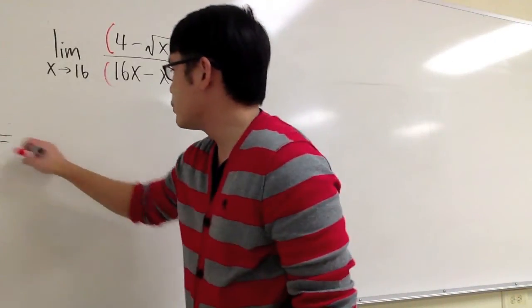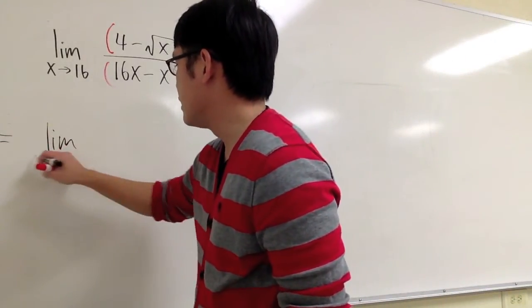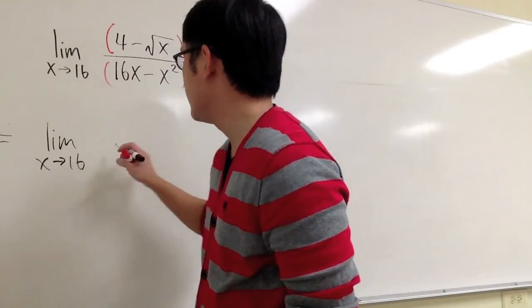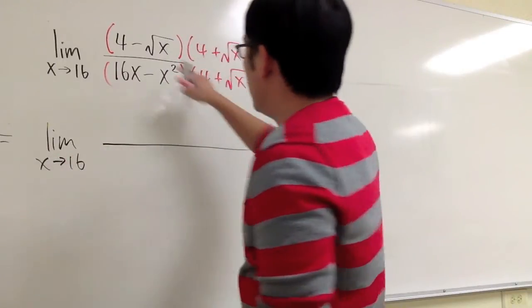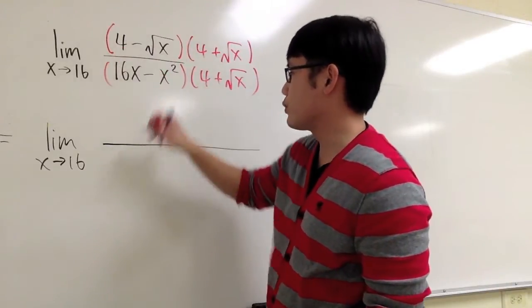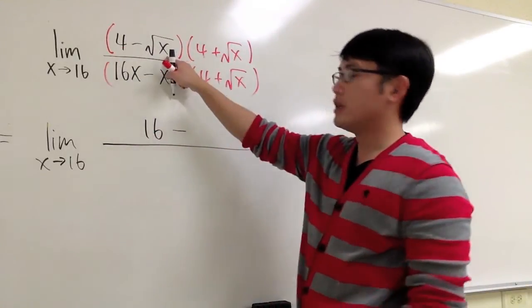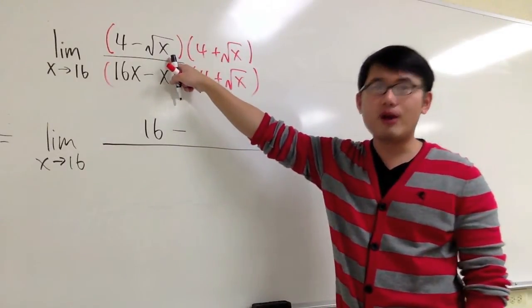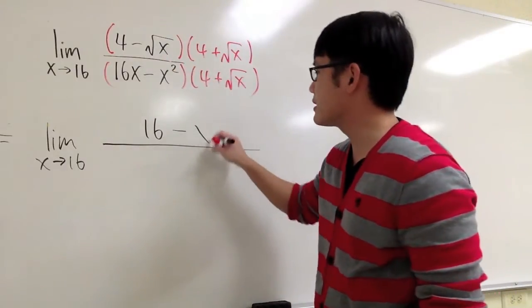And in this case, we are going to end up with, still have the limit when x is approaching 16, and then on top, this is going to be 4 times 4, which is 16, minus the square root squared of x is equal to just x.